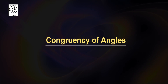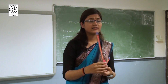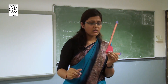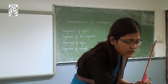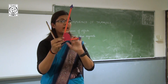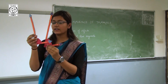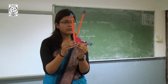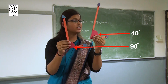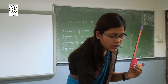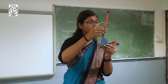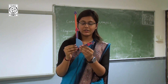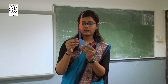Now let's talk about congruency of angles. Suppose I take angle XYZ, which is 40 degrees, and try to superimpose it with angle LMN. I join the horizontal line — am I able to do so? No, because this is 90 degrees and this is 40 degrees, so they do not superimpose. Now I take another angle PQR which is 70 degrees and try to superimpose on XYZ — am I able to do so? No.